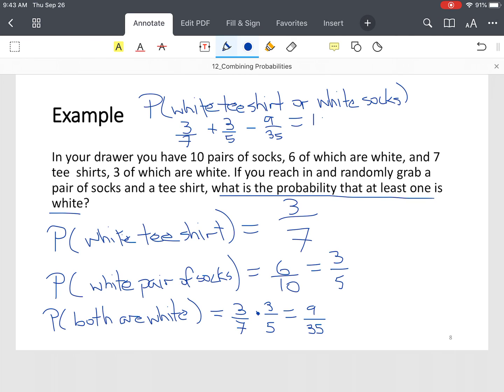So three-sevenths becomes 15 out of 35. We multiply the numerator and denominator here by 5. The three-fifths, we're going to multiply the numerator and denominator by 7. So we end up with 21 over 35 minus 9 over 35. Now notice, all the denominators are 35. So we just add our numerators, 15 plus 21, which is 36.